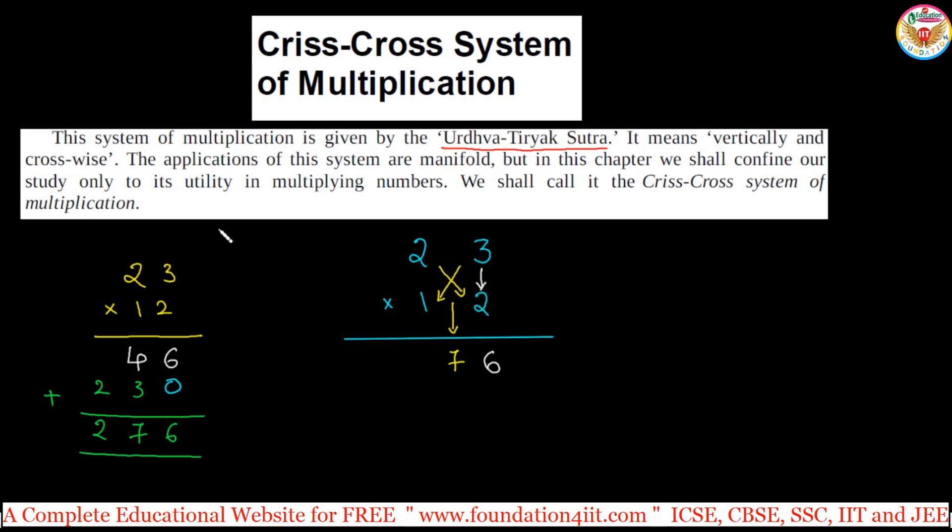Next, changing the colors to show the steps. Next, 2 into 1, that is 2. 2 times 1 is 2. So 276, same we'll get. That's why this is vertically and crosswise in the method. In case if we get the lengthy numbers, let's say 31 multiply with, let's take 25.